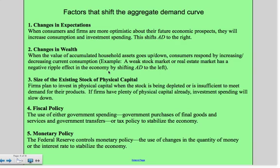The fourth is fiscal policy. The fourth and fifth are both government policies versus consumer policy and business behaviors. Fiscal policy refers to the use of either government spending or tax policy. Government spending equals government purchases of final goods and services and or tax policies to stabilize the economy. Sometimes the government will speed up spending, sometimes the government will speed up taxation or increase levels of taxation in order to accomplish fiscal goals.